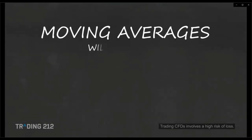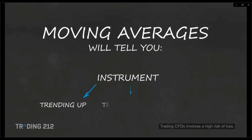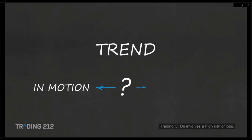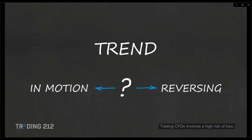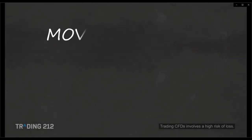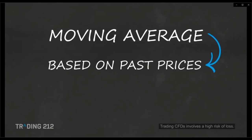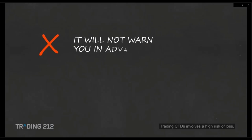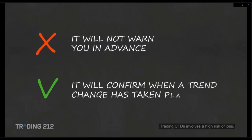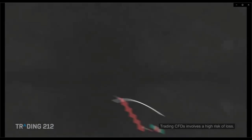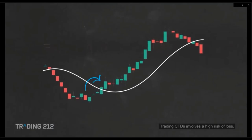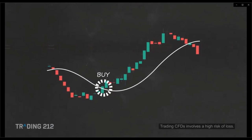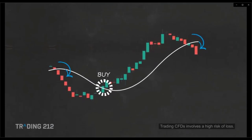Moving averages tell you whether an instrument is trending up, down, or ranging. They can tell you if a trend is still in motion and whether it is reversing or losing momentum. Keep in mind that a moving average is based on past prices and is a lagging indicator — it will not warn you in advance, but it will confirm when a trend change has taken place. When price crosses up and over the moving average, traders take this as a signal to buy; when it crosses down, a signal to sell.